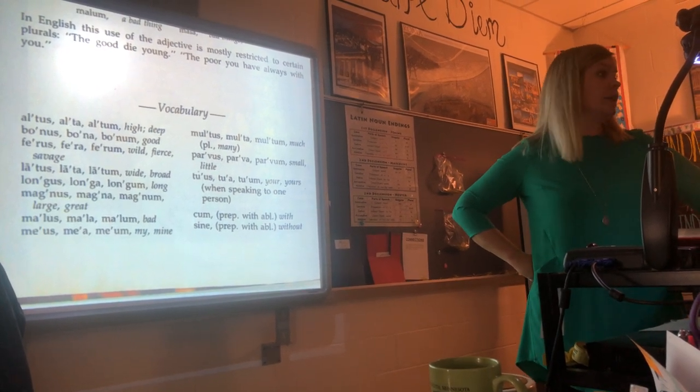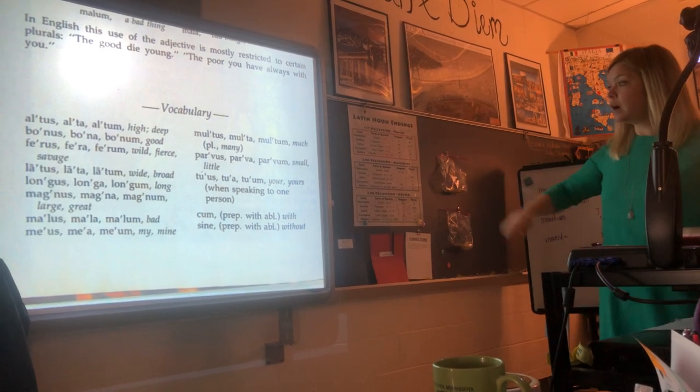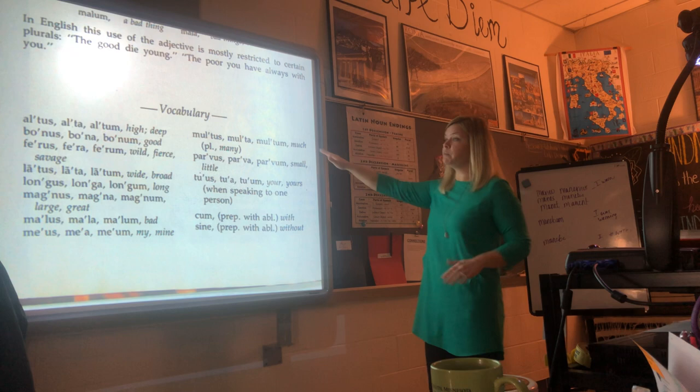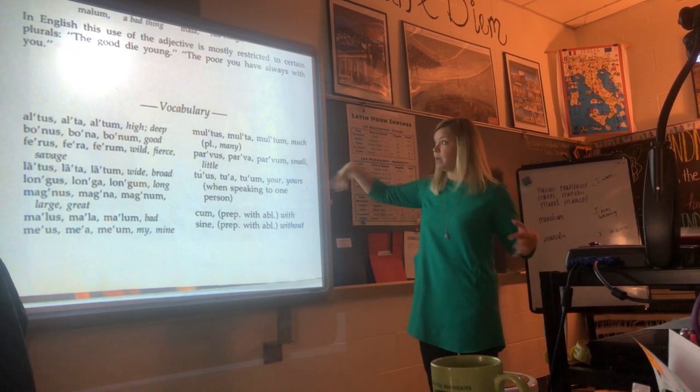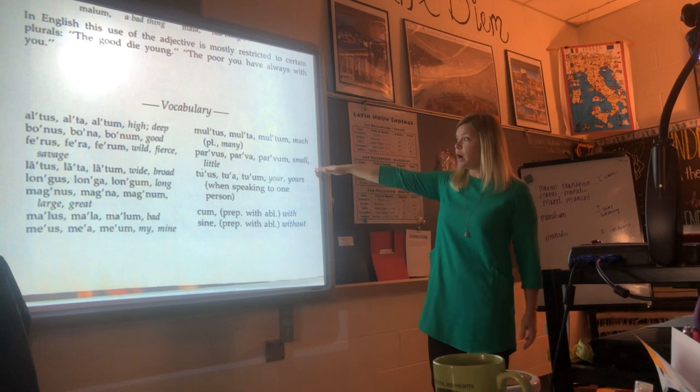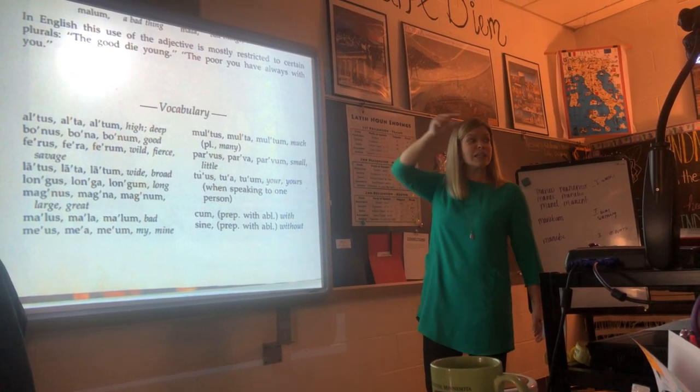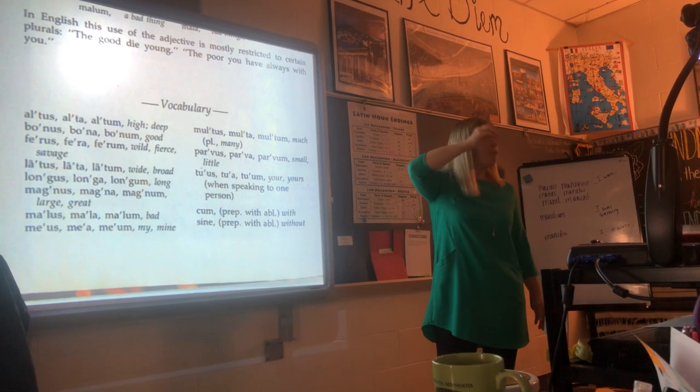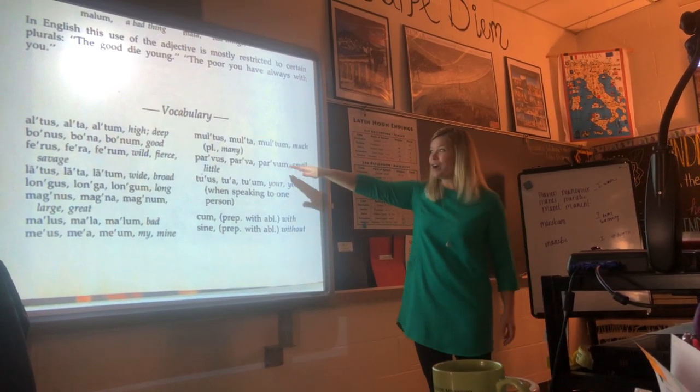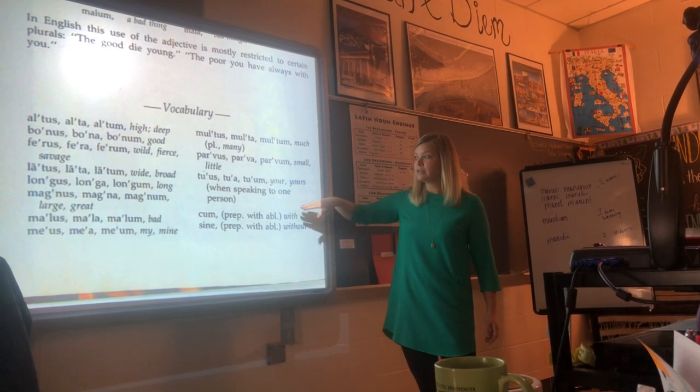We're going to skip meus for a second. Multus. Multiply. Multiplication, right? Means much or many. Multitude. Parvus. Parva, parvum. Small. In golf, you want to get a small number, right? You want to get a par. You want to get a par. Parvus. Parva, parvum. Small or little. Okay.